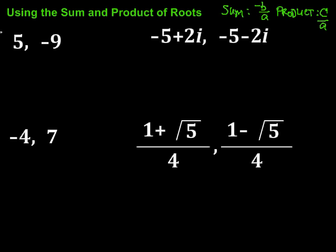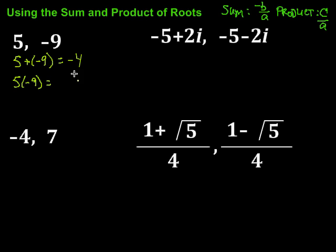Let's take a look at an example. For this first one we have 5 and negative 9 as our roots. The first thing we're going to do is take the sum of those roots. So 5 plus negative 9 is going to be negative 4. Then we're also going to take the product: 5 times negative 9, which is negative 45.